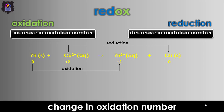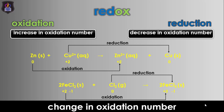Similarly, in the reaction between iron(II) chloride and chlorine gas to form iron(III) chloride, it can be seen that the oxidation number of iron increased from +2 in iron(II) chloride to +3 in iron(III) chloride, which is an oxidation, while the oxidation number of chlorine decreased from 0 in chlorine gas to −1 in iron(III) chloride, which is a reduction.